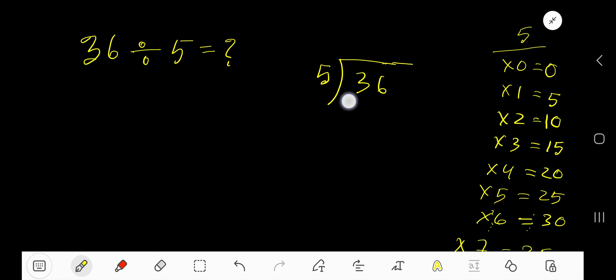So 5 goes into this 3, our considered dividend. How many times? 0 times. As our current dividend 3 is less than 5. So 0 times 5, that gives you 0. Subtract, you are getting 3.